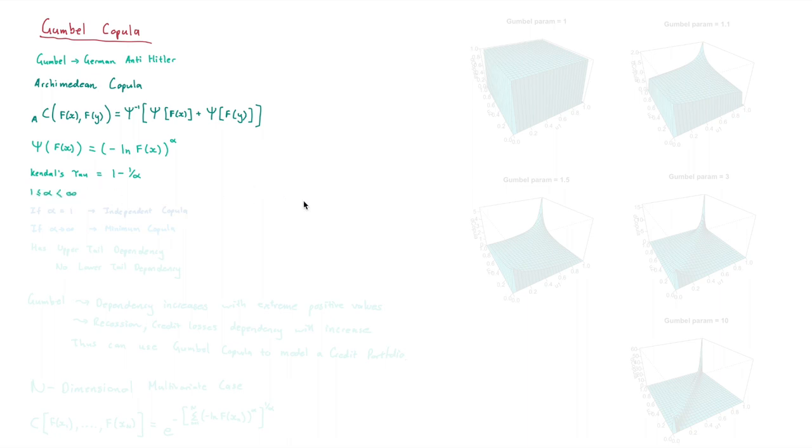Alpha lives between the values of 1 and infinity. We see that when it is equal to 1, we get the independent Copula, and we see that if we had to take it all the way to infinity, we'll actually get the minimum Copula.